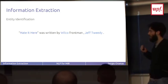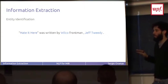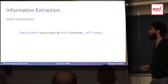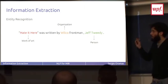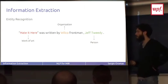First, entity identification. You define the different entities that are mentioned in the text. Hated Here, Wilco, and Jeff Tweedy are entities. Then entity recognition: which kind of entities are there? Hated Here is a work of art, Wilco is an organization, Jeff Tweedy is a person. This is recognition.